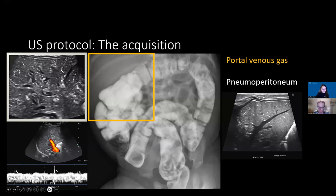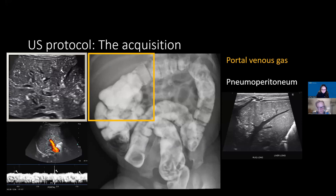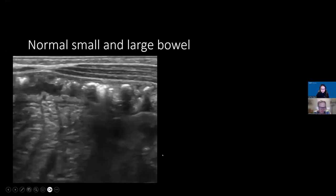Catalina joins the discussion. She notes they do not do liver Doppler for NEC patients, but do include Doppler for evaluation of the bowel loops and mesentery, which she will explain later. They do include the SMA-SMV and duodenum in all NEC babies — it's extra added information that doesn't hurt. There are also papers published on Doppler evaluation specifically of the SMA in NEC, so potentially that's another area to evaluate.